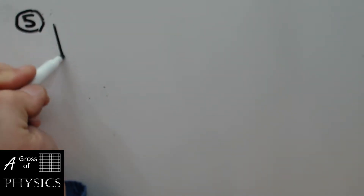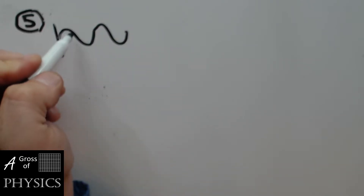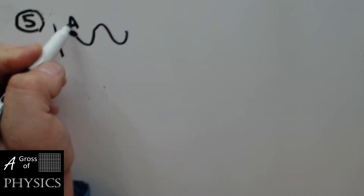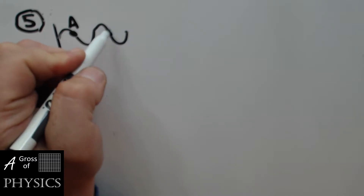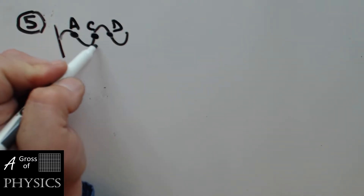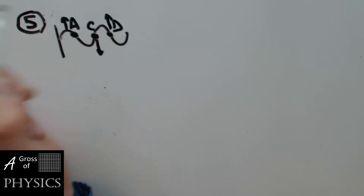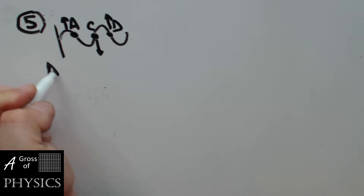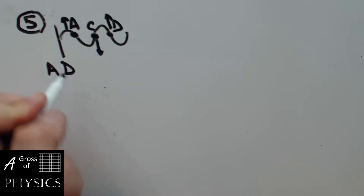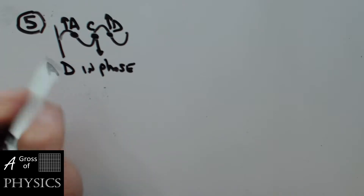Number five. We have another wave where we're looking at what's in phase. It looks like A and D are in phase. We have C, which is the same height, but C is moving down, whereas A and D are moving upward because it's what's behind the wave that matters. So A and D are in phase, and that's choice three.